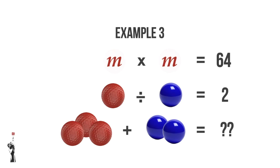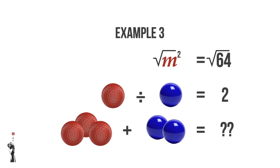Unlike those other examples, we're not adding the variables, but rather we are multiplying them. So M multiplied by M will not give us 2M, but rather M squared. So M squared is equal to 64. What number multiplied by itself gives us 64? That's correct — it's 8. So M is equal to 8.